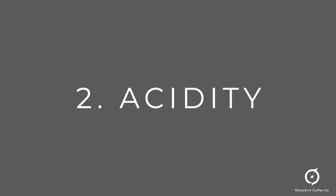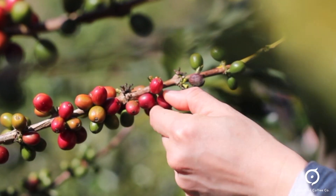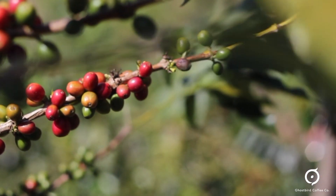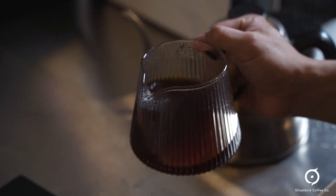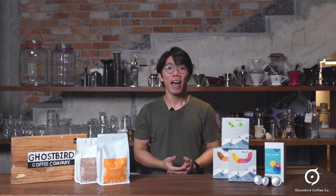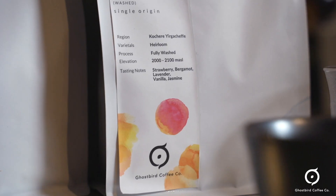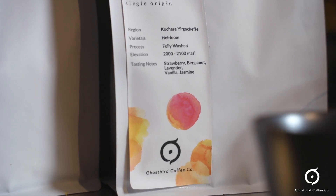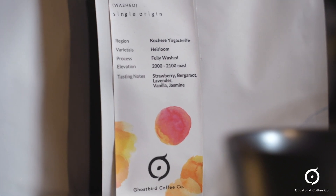The other end of the spectrum would be acidity. Some may ask, why is my coffee sour? The answer is that coffee is actually a fruit. Acidity gives complexity and a pleasant character to your coffee. At times, you may relate it to fruits like orange, lime, strawberry, and plum.